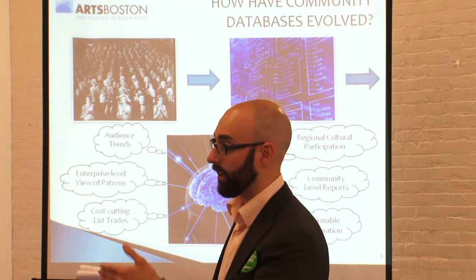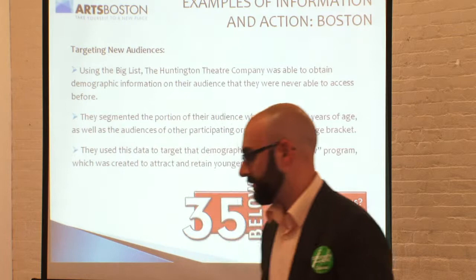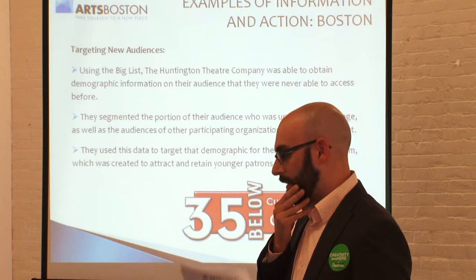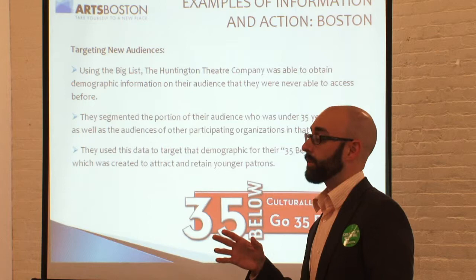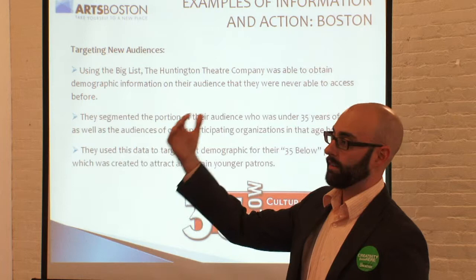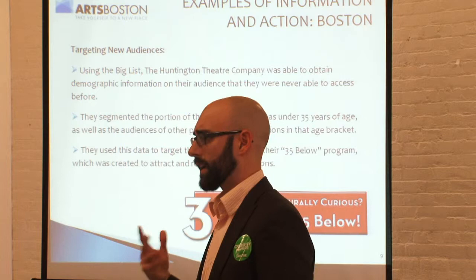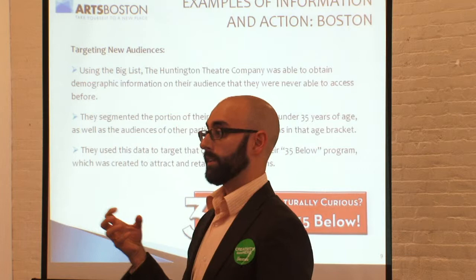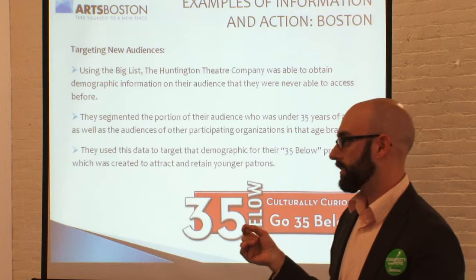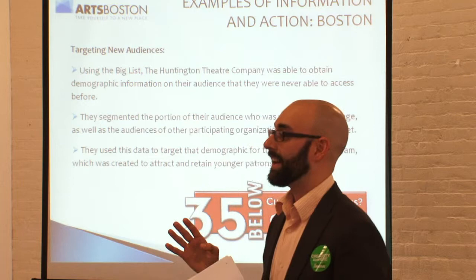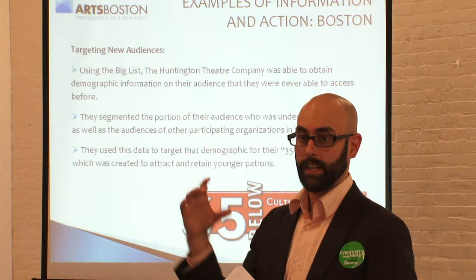There aren't any Berkshires examples yet because it's still a fairly new program — we just launched it in March. Here's the Huntington: the Big List is actually their only way to look at demographics of their audience. They wanted to start a program for audience members under 35 to get them to come to special nights and encourage them to come more often — they called it '35 Below.' They pull names from the Big List of people who are under 35 and mail to the entire list for that age group. This year, for the first time, we also added email addresses. You can look at your own email list and, if you have the snail mail, get demographic information on your emails — so they can now email people on their list who they know are under 35.